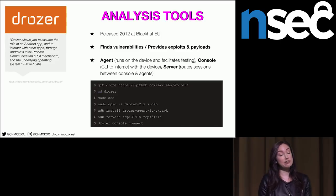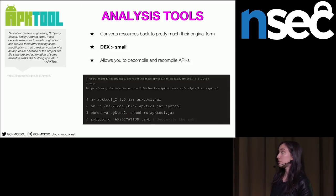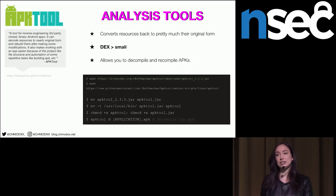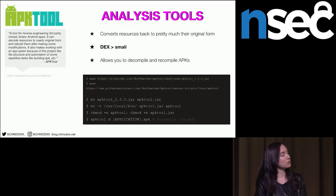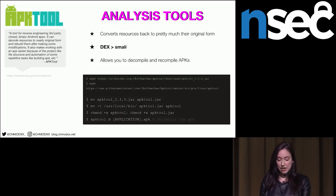APKTool is another really great resource for reverse-engineering applications. It basically takes them back to their original form, converting DEX files to Smali, which is an intermediary language. It's not great to read, but you can convert Smali to a Java-style language that's more readable if you're a Java developer. You can actually recompile your APKs after decompiling them and modifying things.